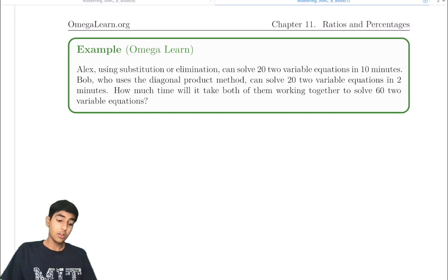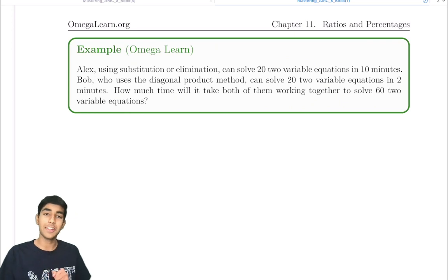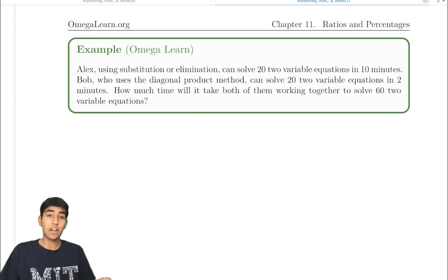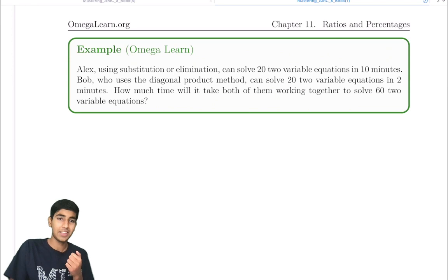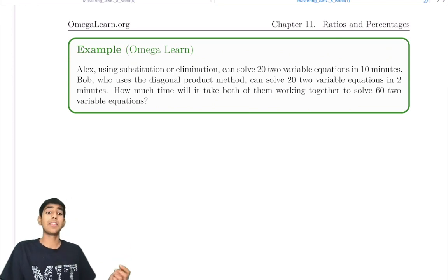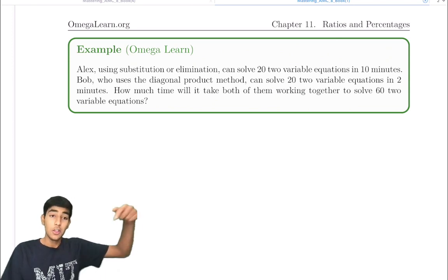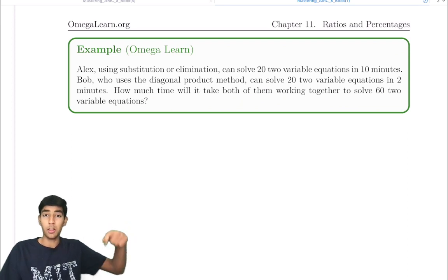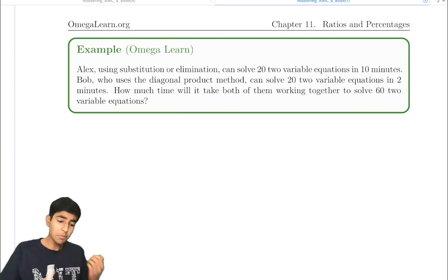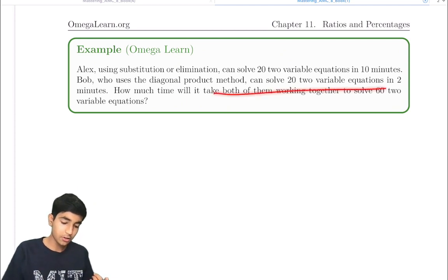Alex, using substitution or elimination, can solve 20 two-variable equations in 10 minutes. Bob, who uses the diagonal product method, can solve 2 two-variable equations in 2 minutes — that's five times faster. If I were you, Alex would learn the diagonal product method. You can find a link to it in the description as well. How much time will it take both of them working together to solve 60 two-variable equations?